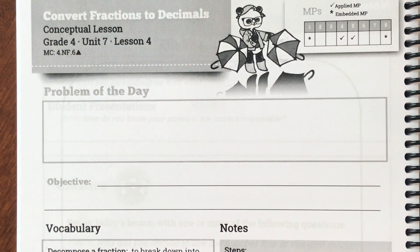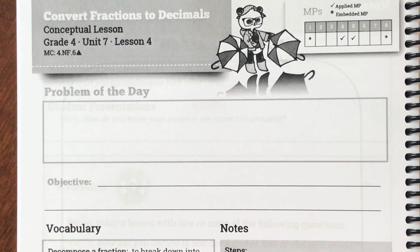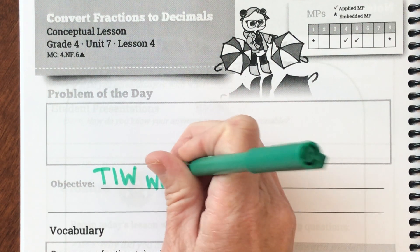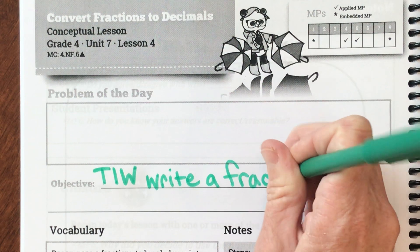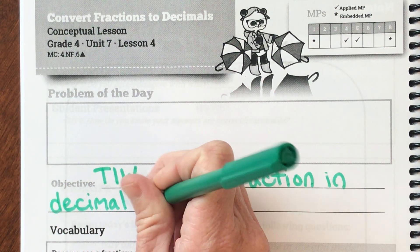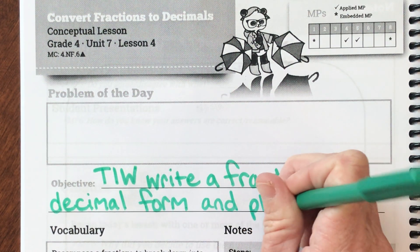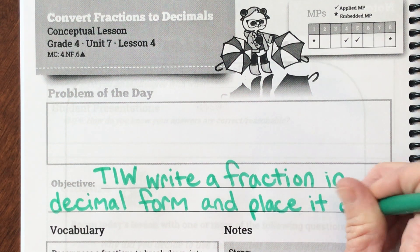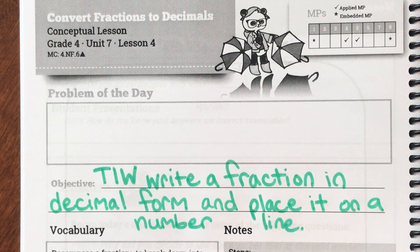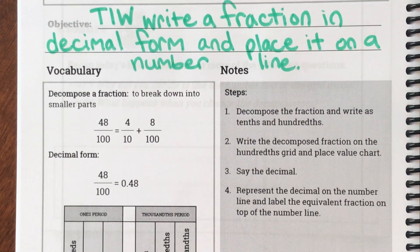Good morning fourth graders. Today we're on page 237 of your student journal, page 237. Our objective today is: I will write a fraction in decimal form and place it on a number line. We've been working with fractions, and what we're really going to work on today is the relationship between fractions and decimals and see how they're connected. Let's look at our first vocabulary.